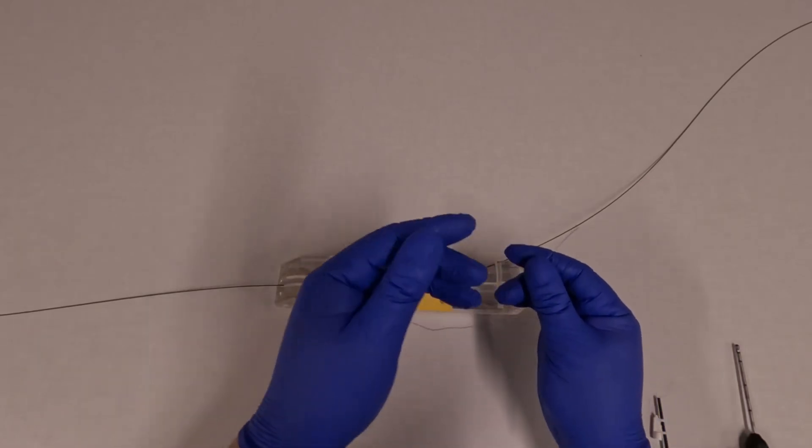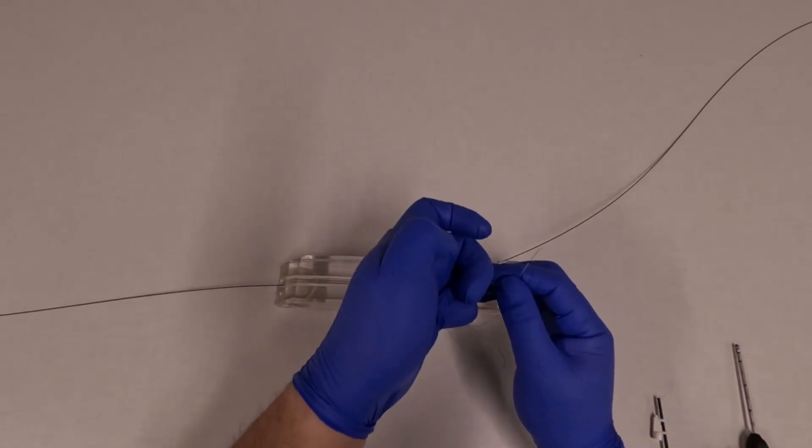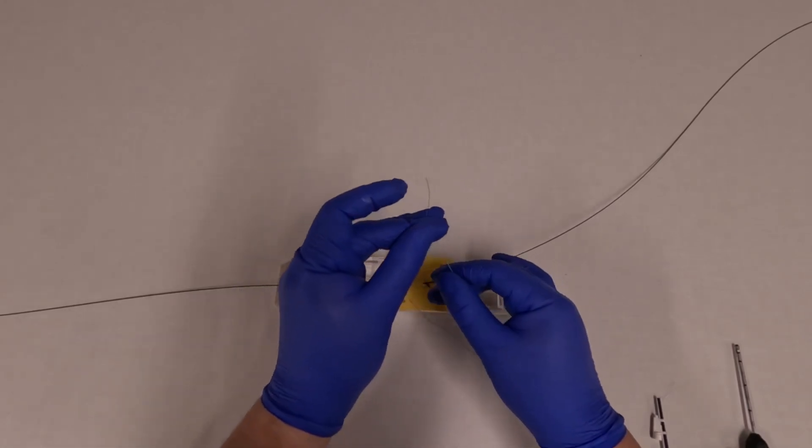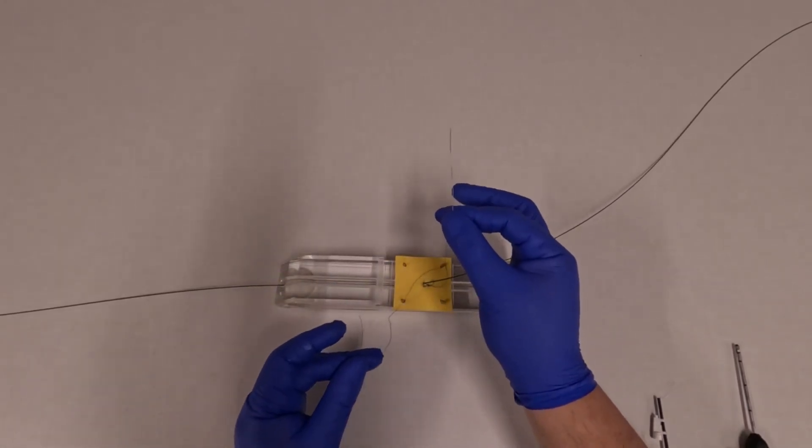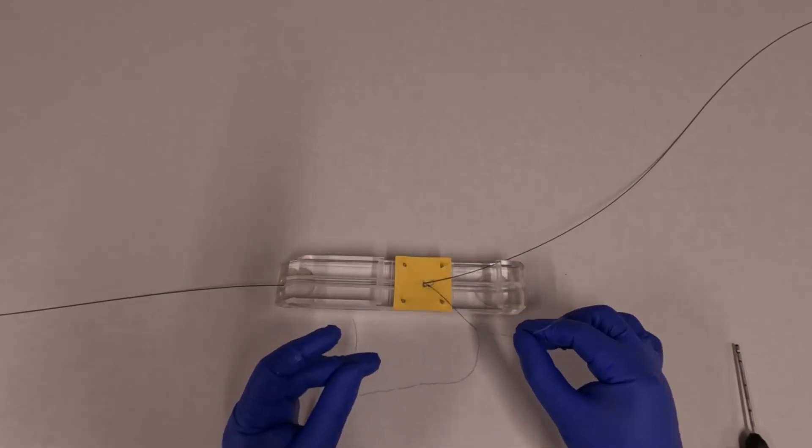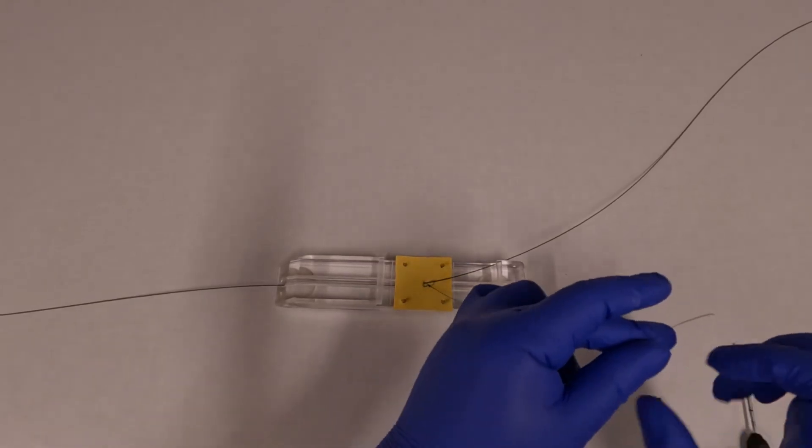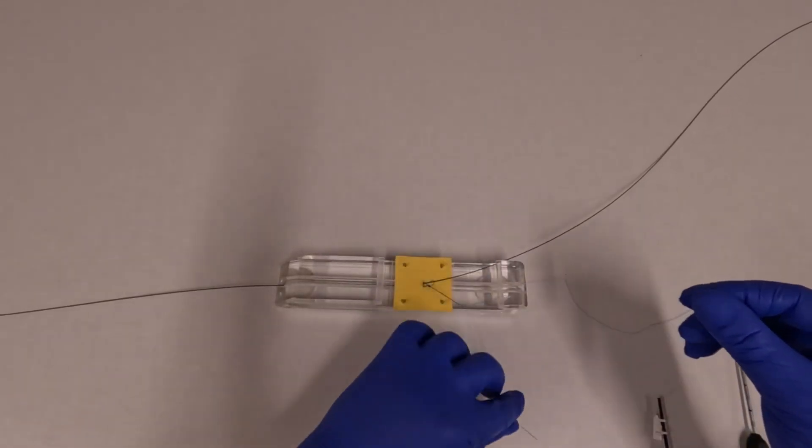Now there are two different sutures that are on this device. One is a blue suture as you can see here. The second arm has a white tip, so we call that the white suture. That's for locking the suture down, so we need to save that until later and make sure you don't pull it too early.